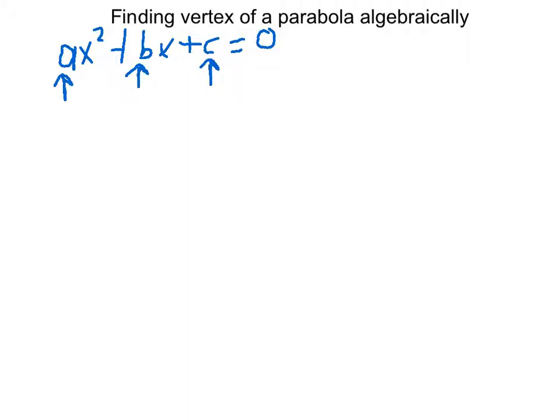So once you recognize these, it's going to be a heck of a lot easier to figure out what the vertex ordered pair is for a parabola. So let's just get to it. Let's say that we have the equation y equals x squared plus 4x minus 3.